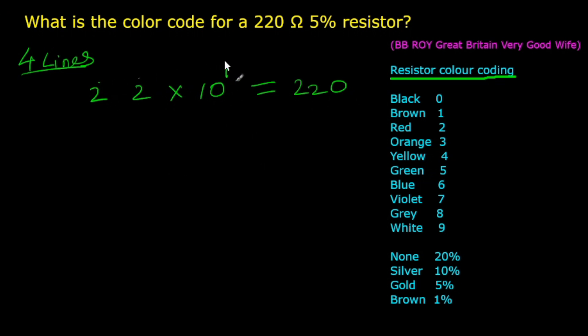So the third band value is 1. Now convert these values to color code by using the color code chart. The first digit is 2, so red. Second also 2, red. The third digit is 1, so brown.